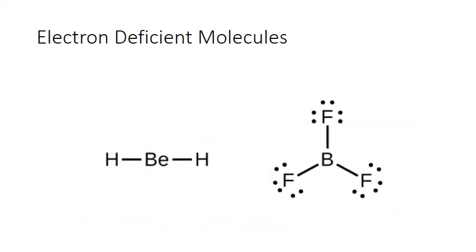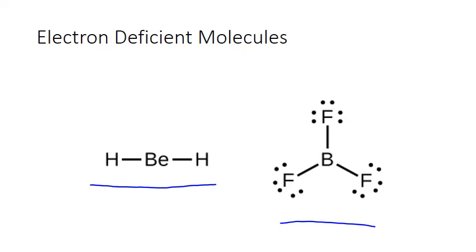Electron-deficient molecules contain an atom that accepts less than eight valence electrons. Hydrogen is a prime example, but two other elements are also sometimes found with less than eight valence electrons: beryllium and boron. In beryllium dihydride, the beryllium only has four valence electrons — just those shared with hydrogen, no lone pairs. In boron trifluoride, boron forms three single bonds, giving it six shared electrons and no lone pairs, for a total of six.